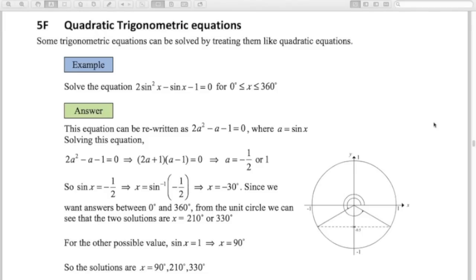So these equations, as you can see from the first one, kind of look like quadratics. 2 sine squared x minus sine x minus 1 equals 0. So we're solving a trig equation, but we can treat it like a quadratic. So in the first one, if I say a is sine x, then we get this equation, 2a squared minus a minus 1 equals 0.